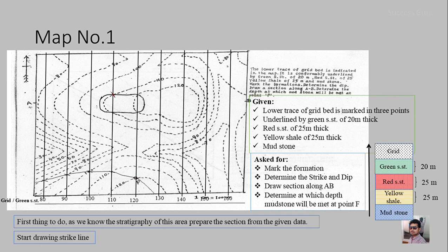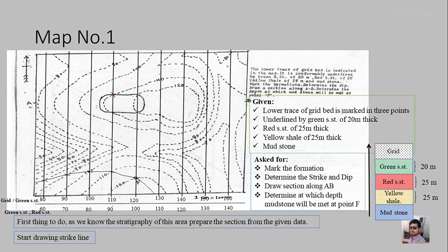This completes the tracing of the first contact between two formations. The next step is to move down the stratigraphy — from the grey-green sandstone contact to the green-red sandstone contact. For that, we reduce the strike values by the thickness of the green sandstone, which is 20 meters. So if the strike was 160 here, we reduce it to 140, and so on. Likewise, fill in all values across the map, then apply the same method as before — matching strike and contour values.